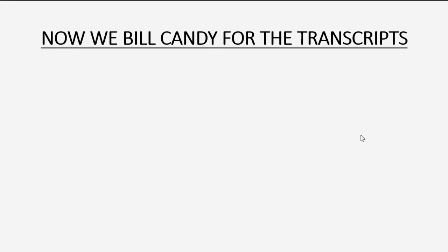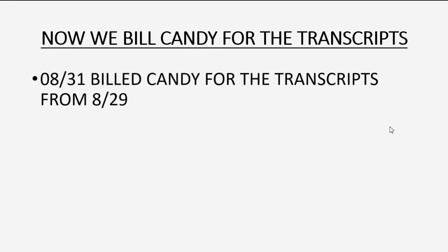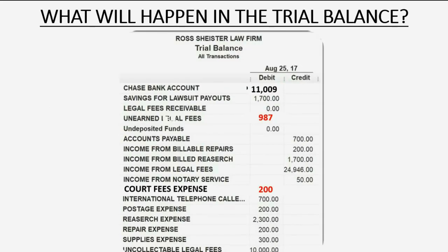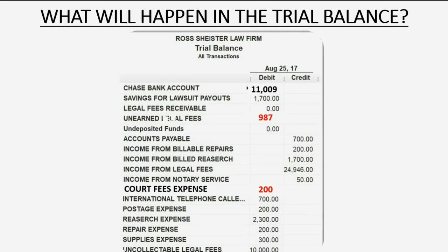Finally, we'll bill Candy for the transcripts. On the same day we bill Candy for the transcripts we paid for on August 29th as part of the original check we gave to the county clerk. What will happen in the trial balance at the moment we bill Candy?